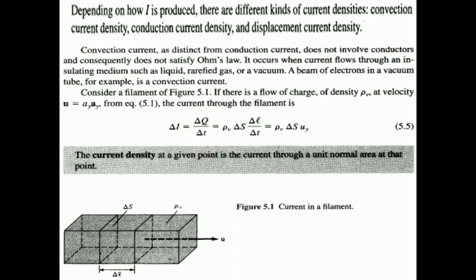We know that dI = dq/dt. We also know that dq = ρv·dV, and dV can be written as dS·dl. Since dl/dt is distance over time, it equals velocity. So we can write dI = ρv·dS·u_v, where the electron passes through the filament in the y-direction. The current density at a given point is current through a unit normal area, so J = ρv·u, where u is the velocity.